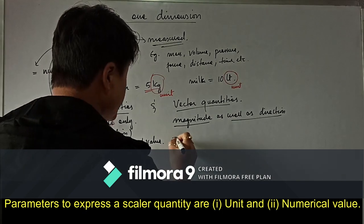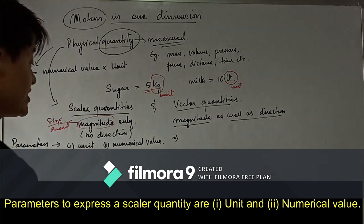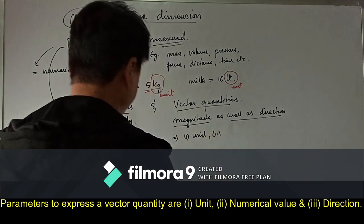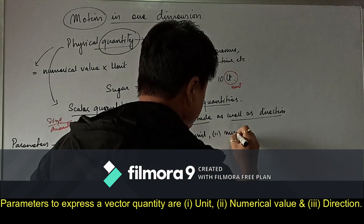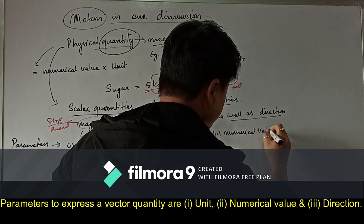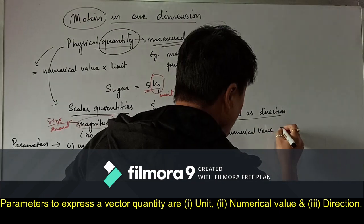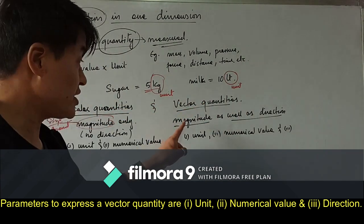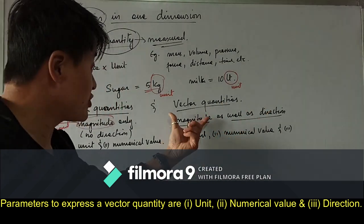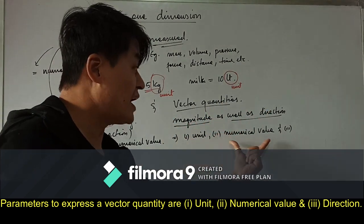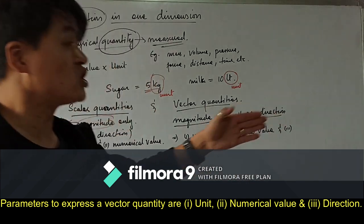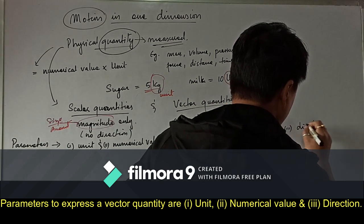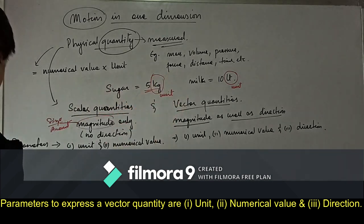For vector quantities, the first two parameters are the same: unit and numerical value. But vector quantities also have a third parameter — direction. To define a vector quantity we require unit, numerical value, and direction.